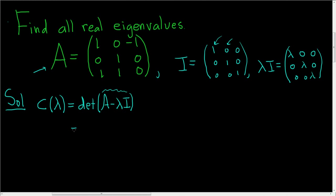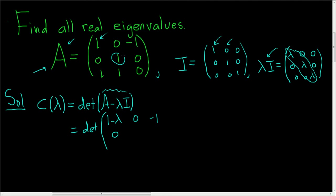We want the determinant of A minus λI. All we do is take A and subtract this matrix — since it's 0 everywhere except on the diagonal, we just subtract λ from each diagonal entry. The first entry becomes 1 minus λ, and the other diagonal entries are updated similarly, giving minus λ in the bottom-right.